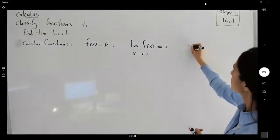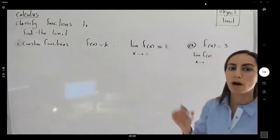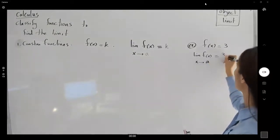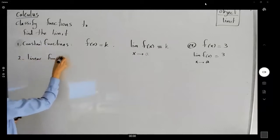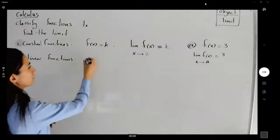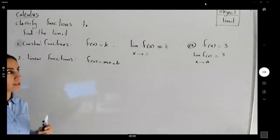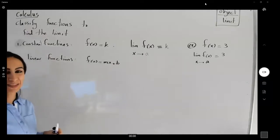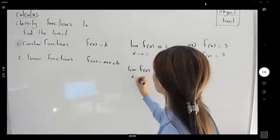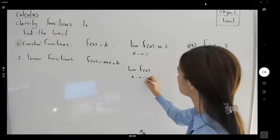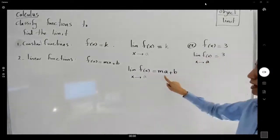For example, if you have f of x equals three, then the limit of f of x as x approaches any number is always three. Next, linear functions — like f of x equals mx plus b. These are examples of nice functions. It means that if you want to find the limit of these types of functions, you just substitute. Direct substitution: the limit of f of x as x approaches a, whatever that number is, equals m·a plus b.